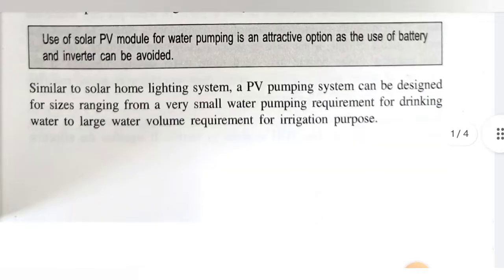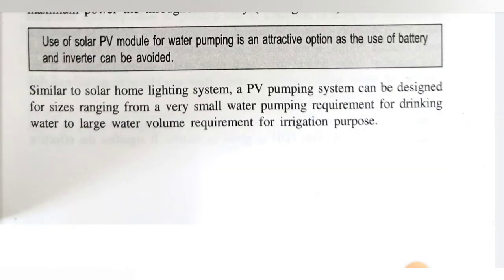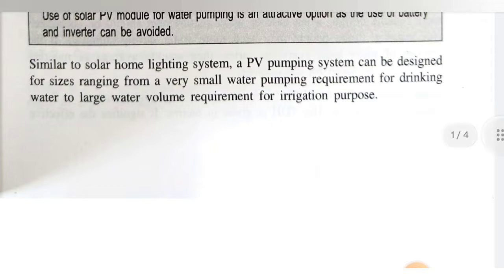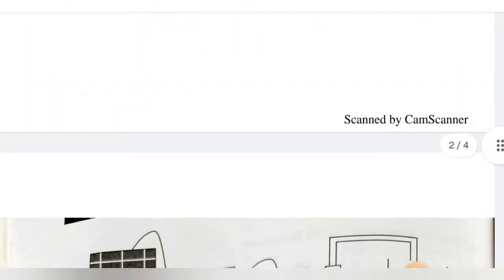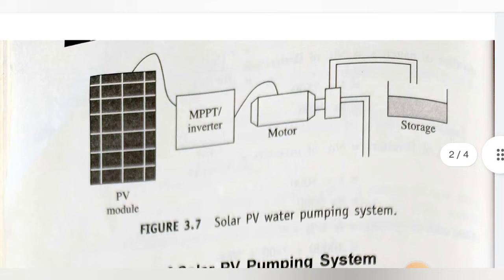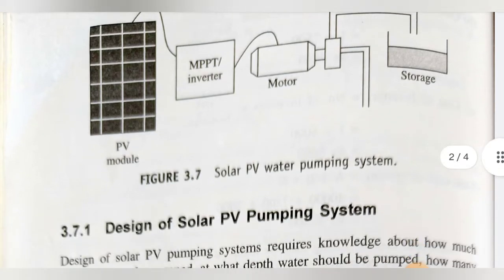Similarly to a solar home lighting system, a PV pumping system can be designed for sizes ranging from very small water pumping requirements for drinking water to large water volume requirements for irrigation purposes. That means for household purpose and for irrigation purpose also, we can use the solar PV water pumping system.